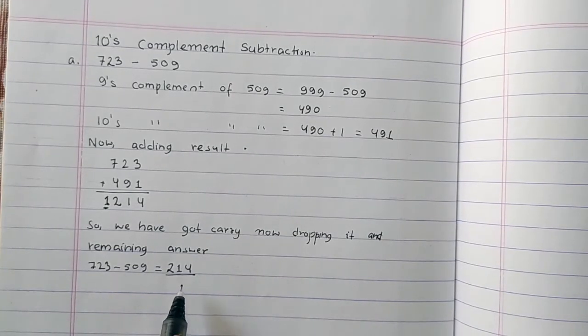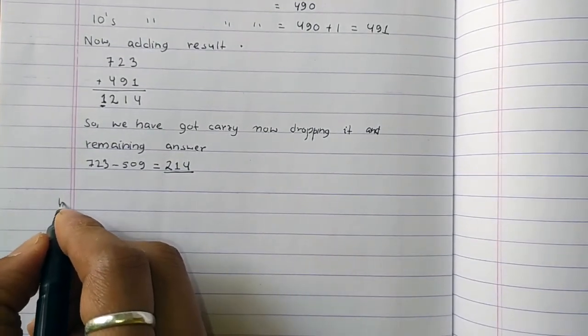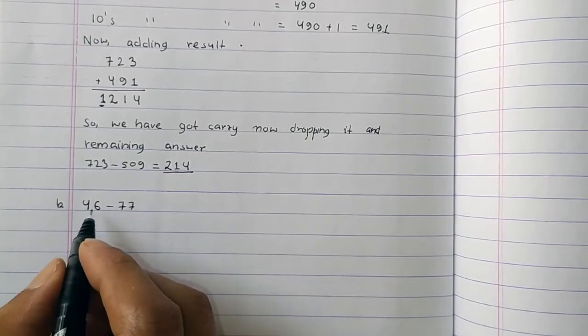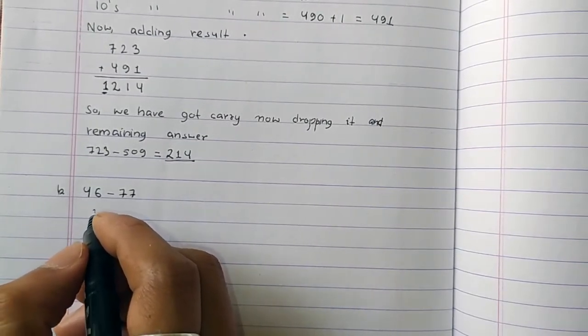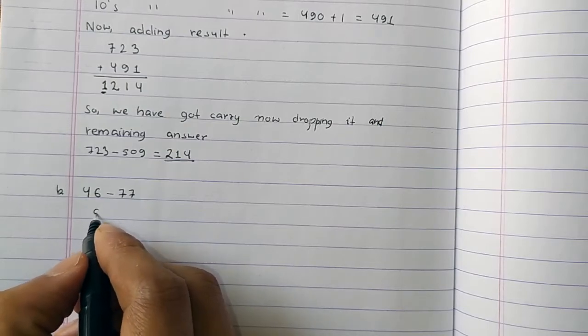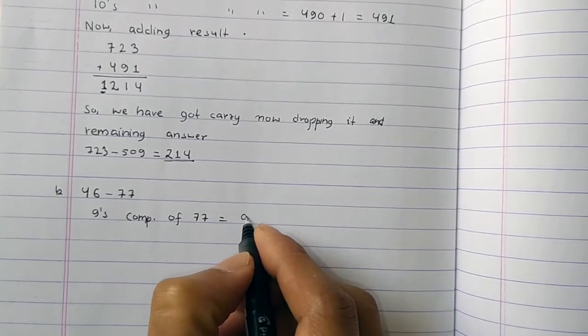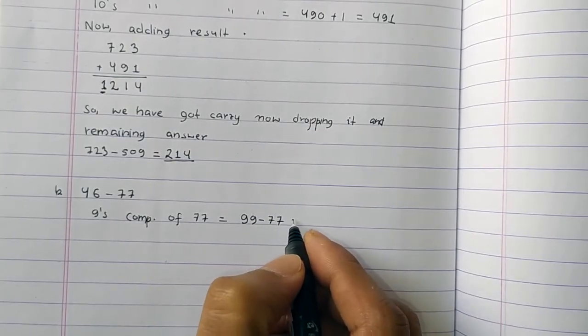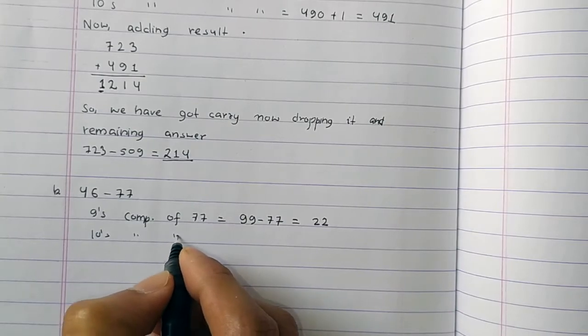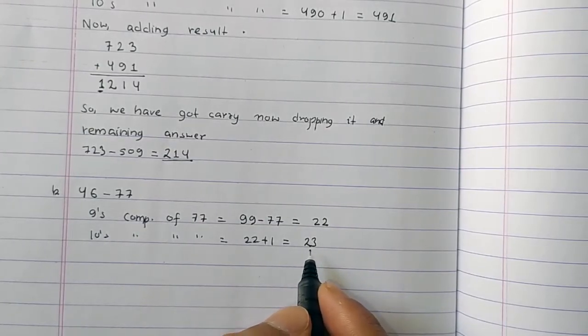Next example where we have no carry: 46 minus 77. The 9's complement of 77 equals 99 minus 77 equals 22. The 10's complement is 22 plus 1 equals 23.